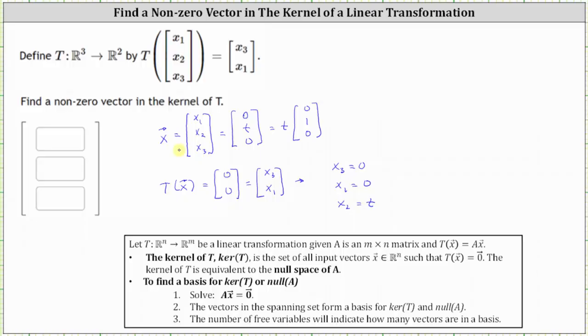This indicates that any scalar multiple of the vector (0, 1, 0) would be in the kernel of T, meaning T of the vector would equal the zero vector.